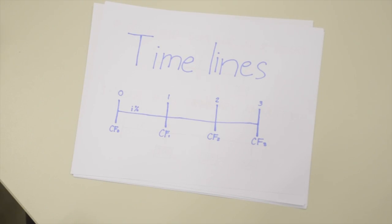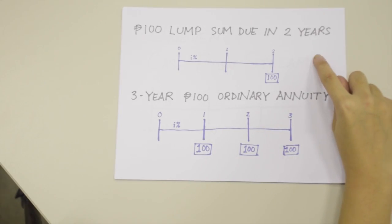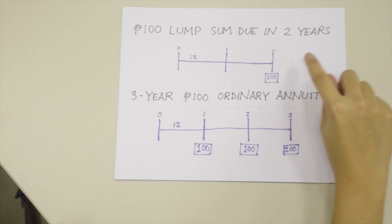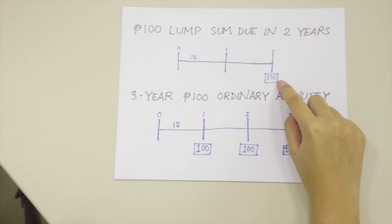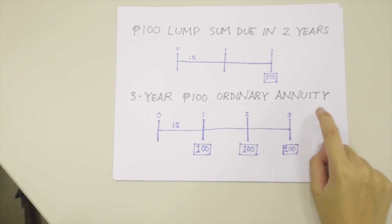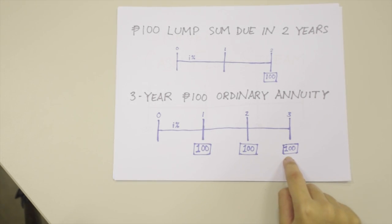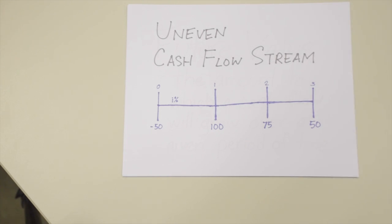To further understand the concept of time value of money, we must know how timelines work. In drawing a timeline of a 100 peso lump sum due in two years, we can see that the payment was given at the end of the maturity. Now, in drawing a timeline for a three-year 100 peso ordinary annuity, we can see that the payment was given at every period until the end of the maturity. However, there are times where there are uneven cash flow streams, as seen in the illustration.